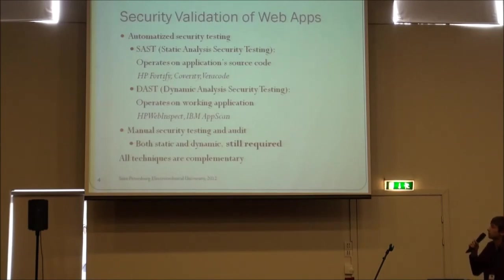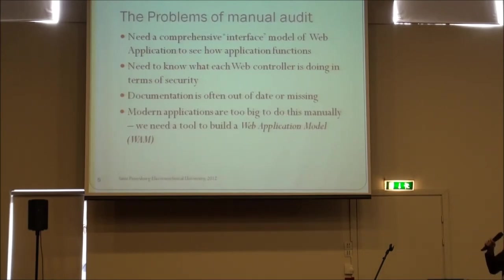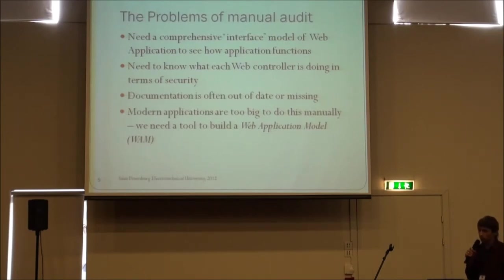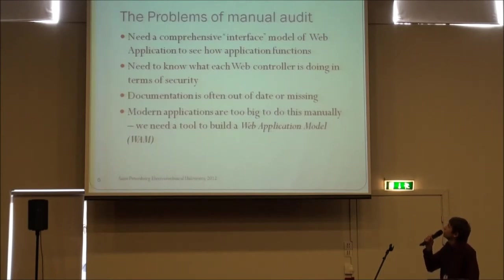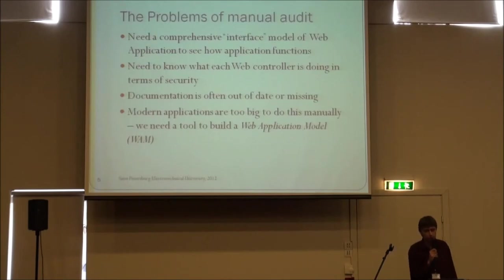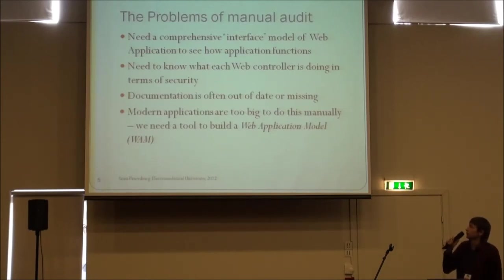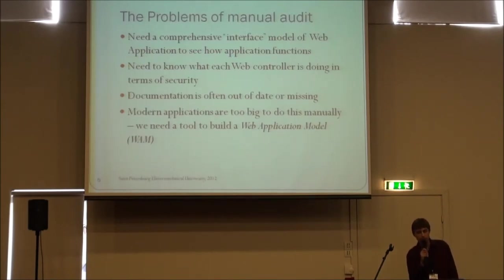Automated tools do as good as they can, but let's concentrate on how we can help with manual audit of a web application. When you are given a big web application, it's hard to see what all parts are doing and how the application functions. We need a comprehensive interface model of the web application to see how it functions and what each web controller is doing in terms of security. Project documentation should be a source for that, but it is usually out of date or missing in the real world.